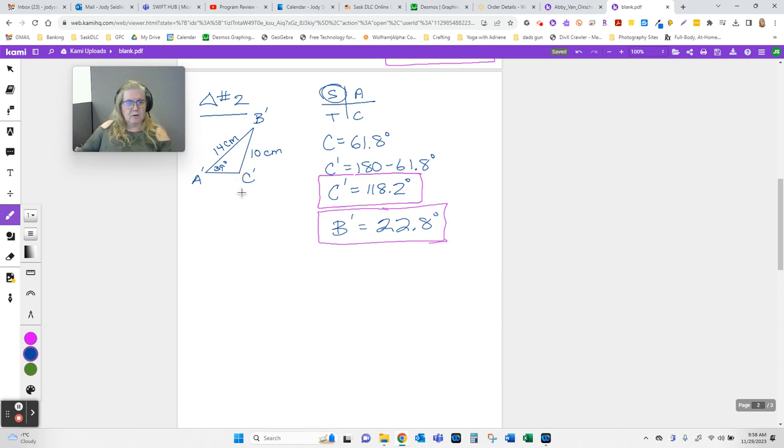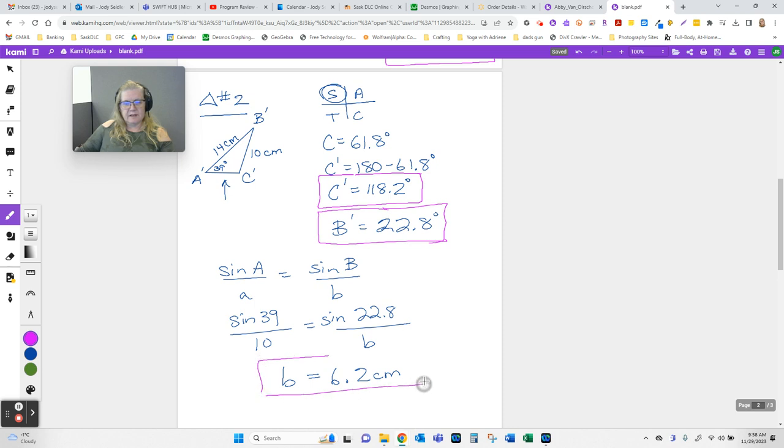And last but not least, we need to know side B. So, sine of A over A equals sine of B over B, and we fill it all in. And we solve. So I'm going to have 10 sine 22.8, and I'm going to be dividing by sine of 39. And you're going to find out that B is 6.2 centimeters. And there's the solution for the second triangle.